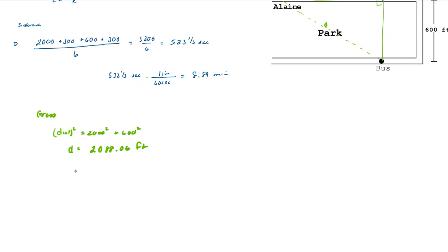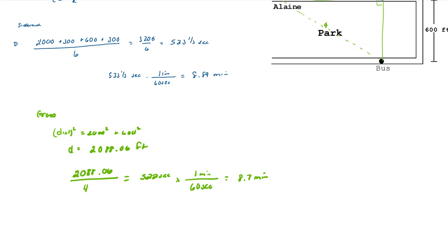Her total distance on the grass is 2,088.06 feet divided by her rate of 4 feet per second, which gives 522 seconds. That's better than 533, but is it enough? Converting: 522 ÷ 60 = 8.7 minutes — faster than the sidewalk, but still not fast enough. She's going to miss the bus.